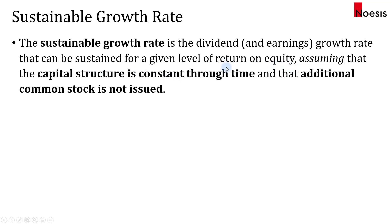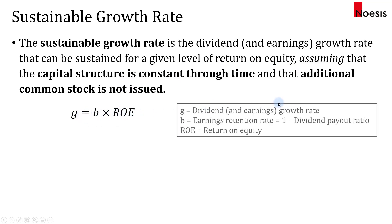The formula for the sustainable growth rate is G equals B times ROE. G is the growth rate in dividends and earnings. B is the earnings retention rate, which is also 1 minus the dividend payout ratio. The earnings retention rate is the earnings retained or reinvested divided by total earnings. ROE here is based on the return on new investments.